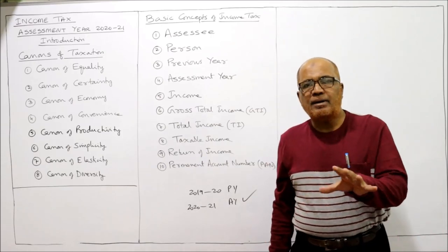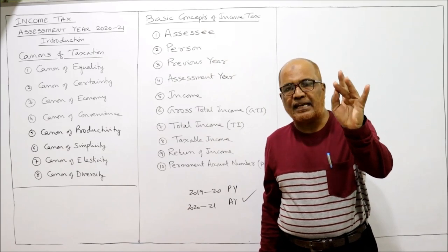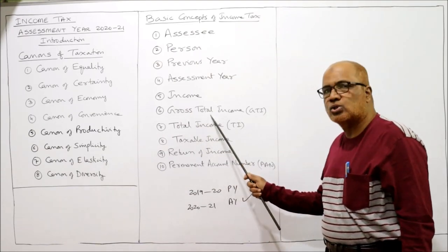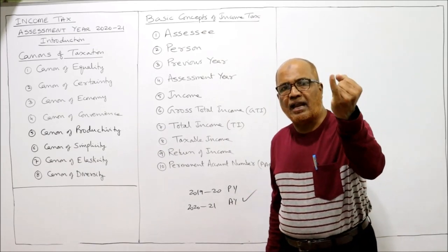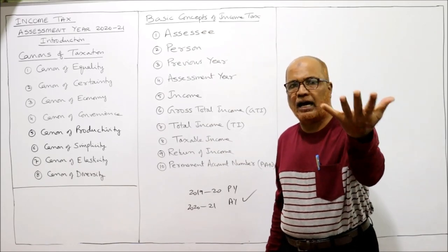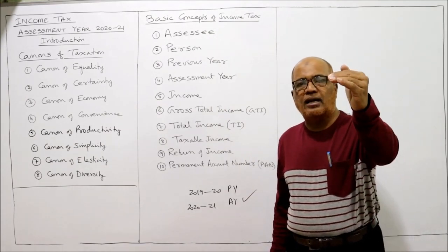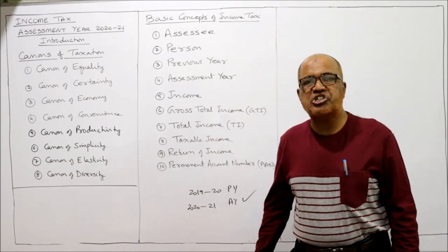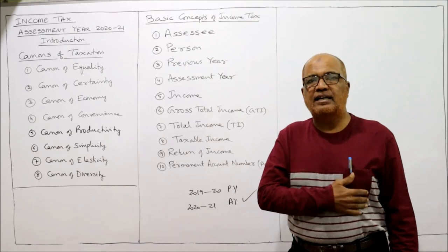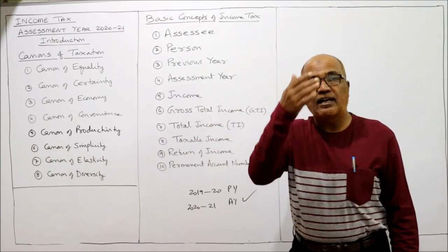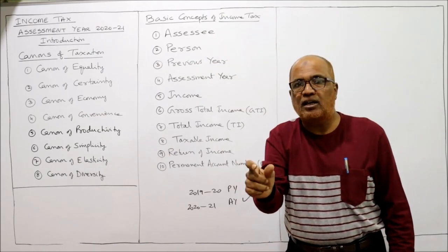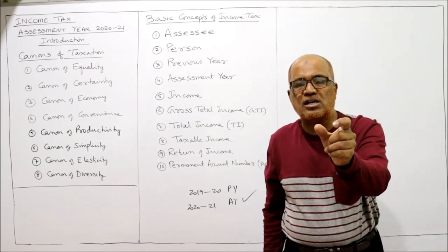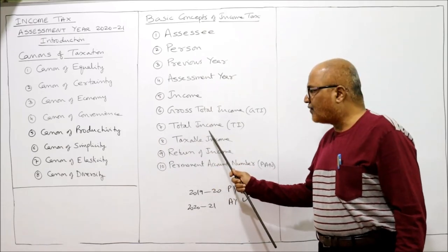Gross total income: the Income Tax Act has given five heads of income — income from salary, income from house property, profits and gains of business and profession, capital gains, and income from other sources. The total of these five heads of income is called gross total income. From the gross total income, deductions available from Section 80C to 80U are deducted. For example, 80C for qualified savings, 80G for donations, 80D for medical insurance. All eligible deductions are deducted from GTI.